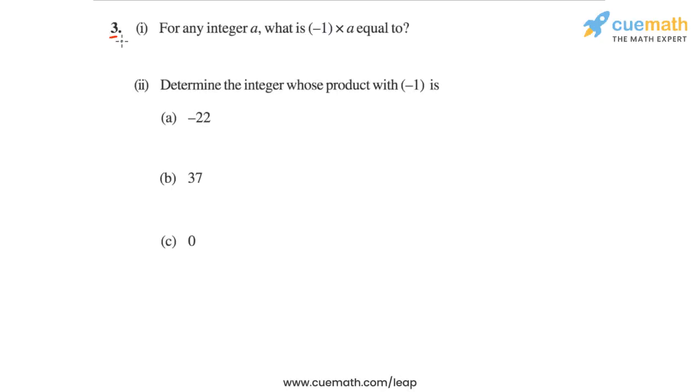In question 3 of this exercise, part 1 asks: for any integer a, what is (-1) × a equal to? This part is easy because we know that -1 multiplied by any integer gives us the additive inverse of that integer. So (-1) × a will give us the additive inverse of a, which is equal to -a. So the answer for the first part is -a.